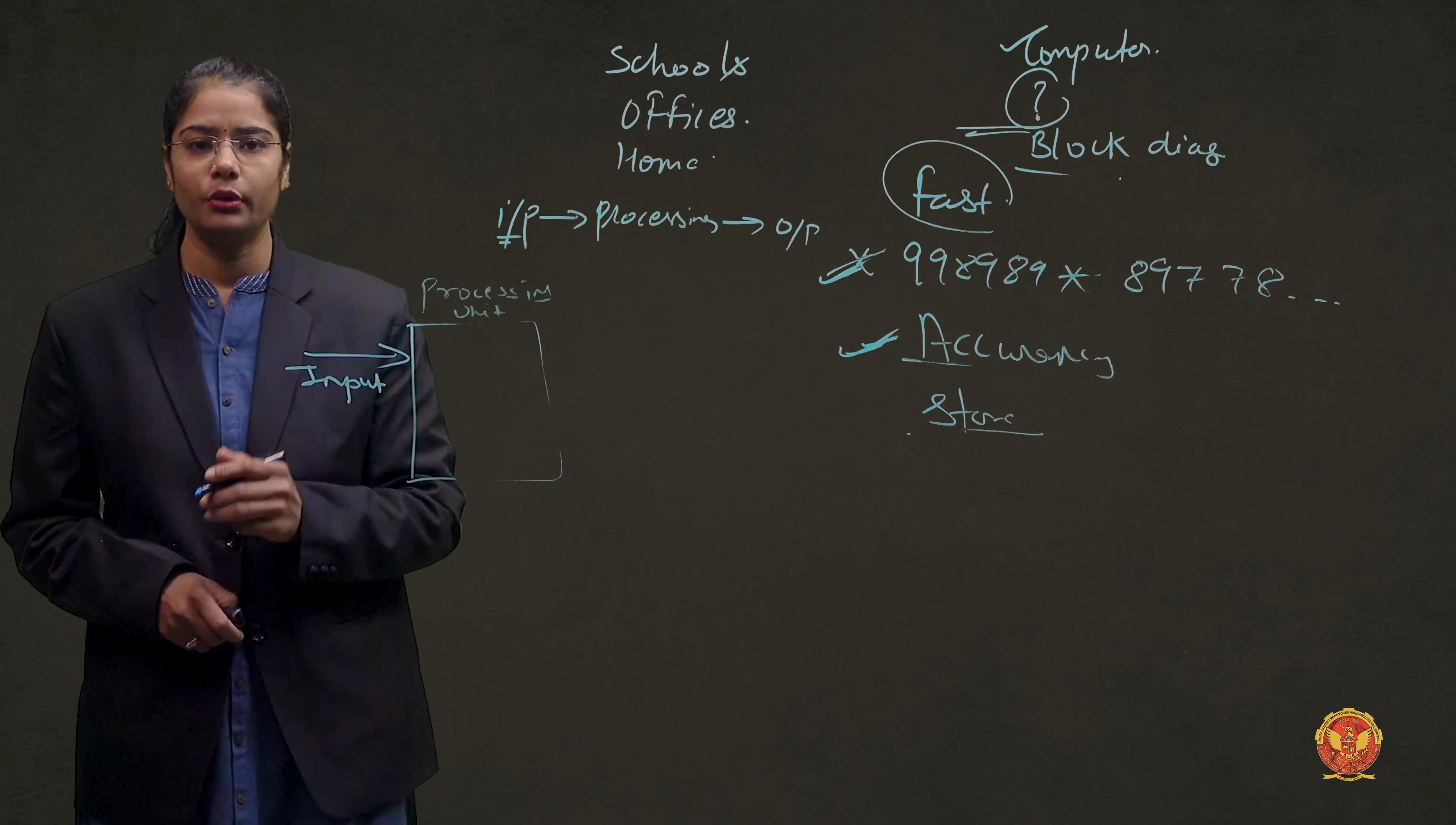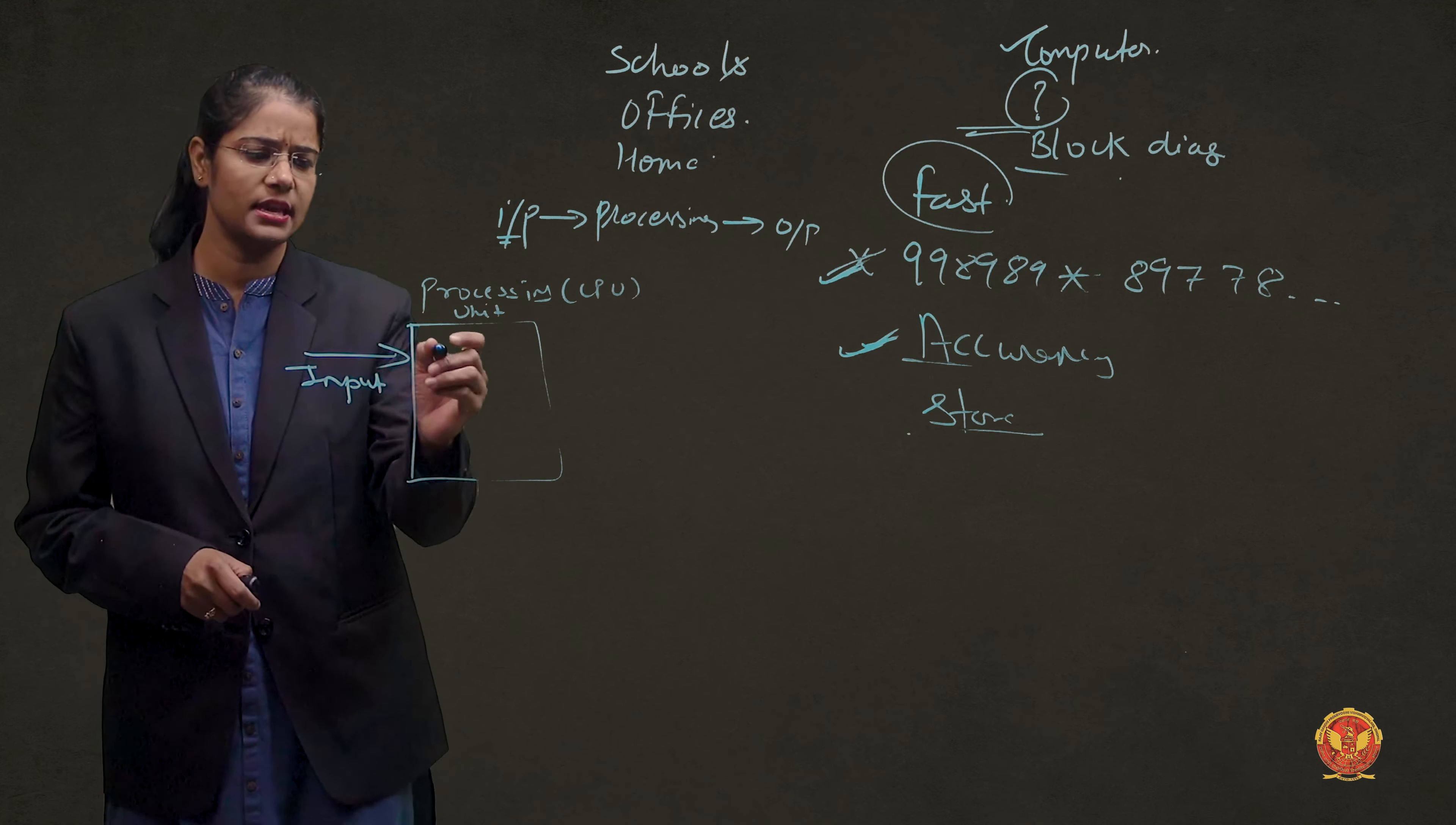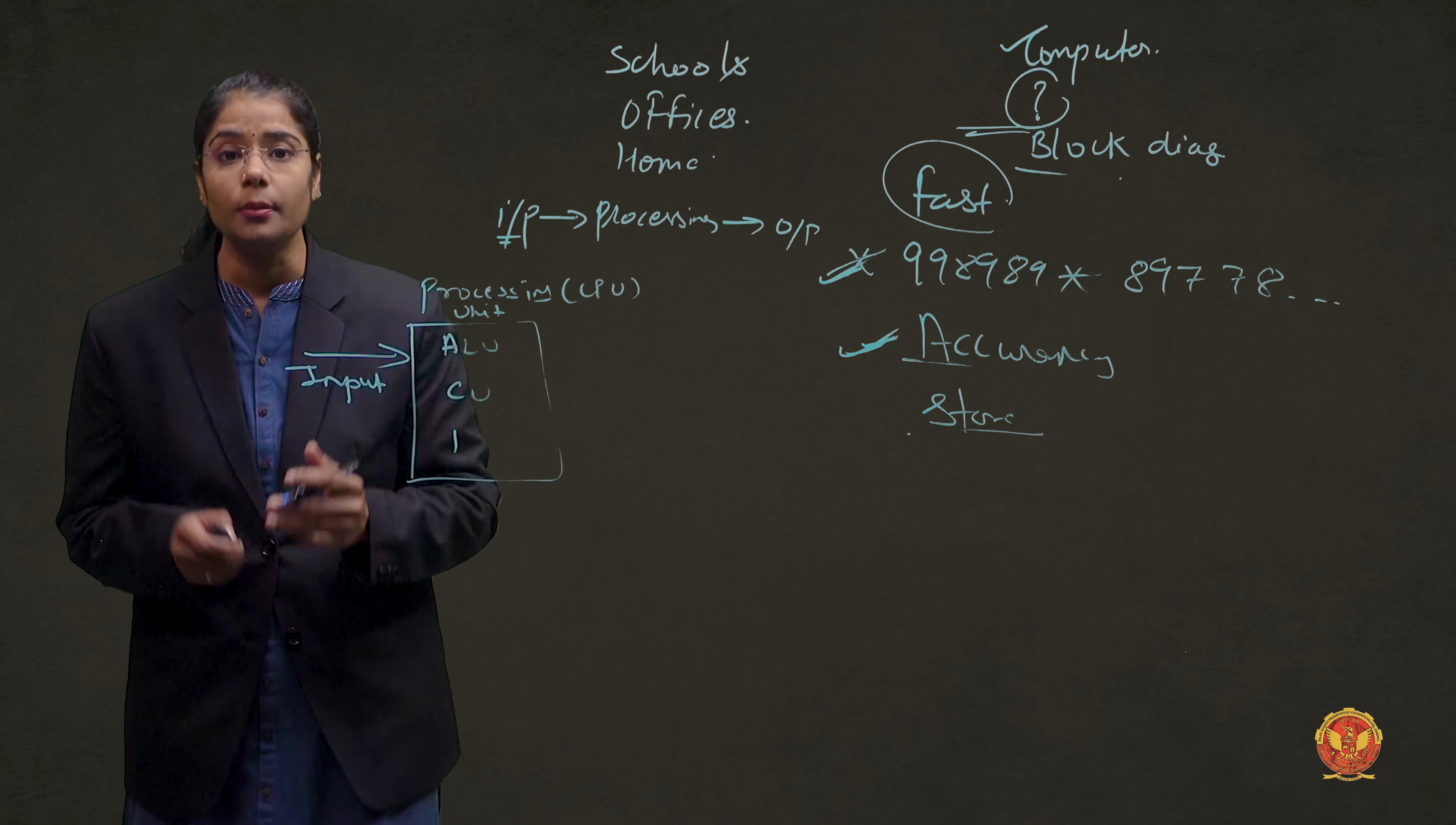This processing unit, actually, we also call CPU. In this CPU, there are some components like here, ALU, CU, and some registers.